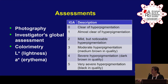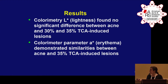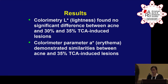In terms of colorimetry data, we specifically looked at the L-star, representing lightness and darkness of the lesions, and the A-star, representing erythema. For the L-star parameter, we found no significant difference between acne and 30% and 35% TCA-induced lesions. In terms of the A-star or erythema parameter, we found similarities between the acne and 35% TCA-induced lesions.